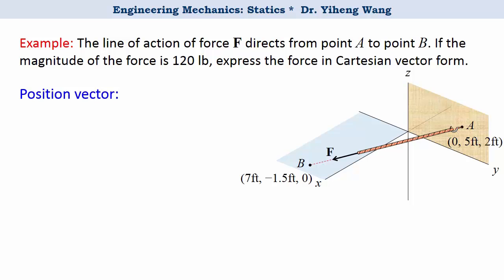So we start with finding the position vector R from point A to point B. It equals to the position vector of the end point, point B, minus the position vector of the start point, point A. It's calculated by the coordinates of point B minus the coordinates of point A. And as you can see, it does have the unit of foot.